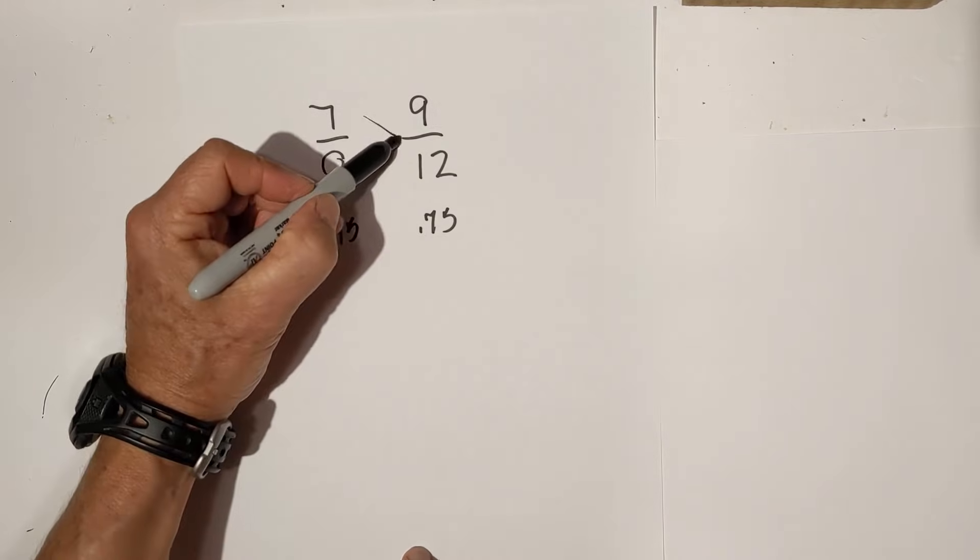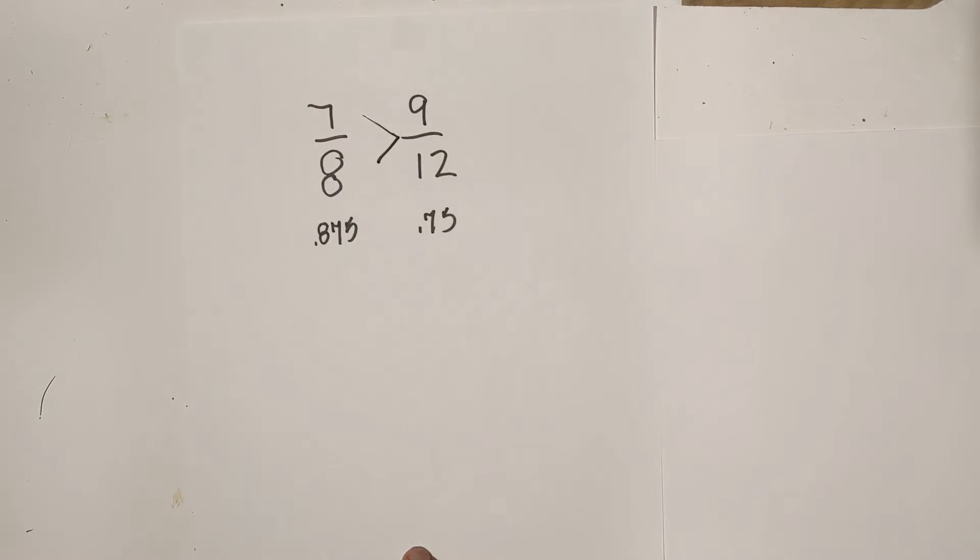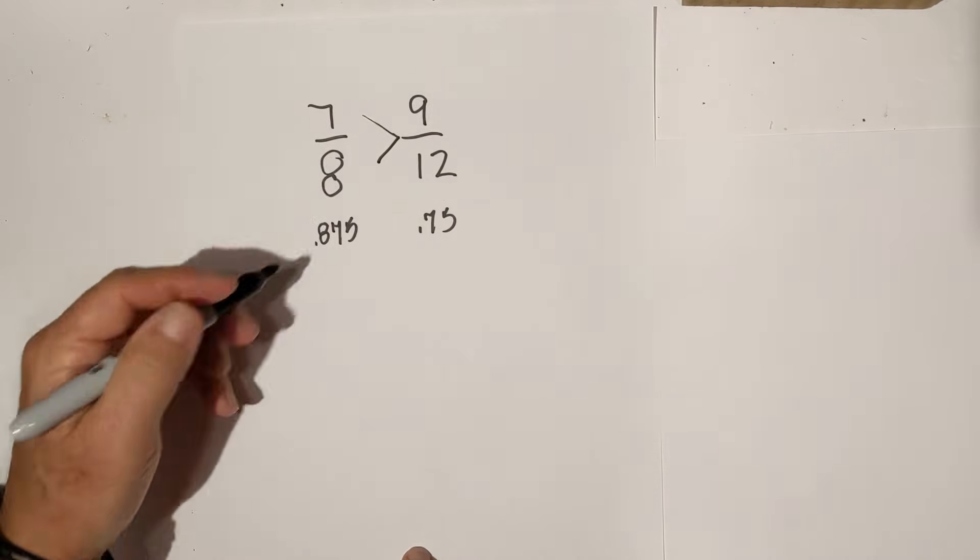0.875 is larger than 0.75. So, 7 eighths is larger than 9 twelfths.